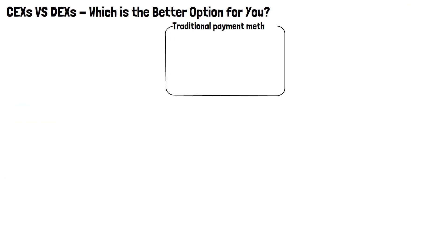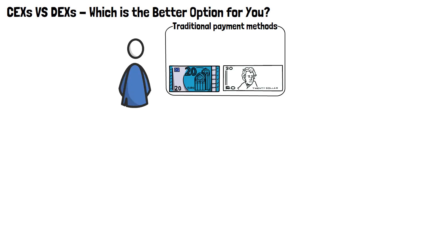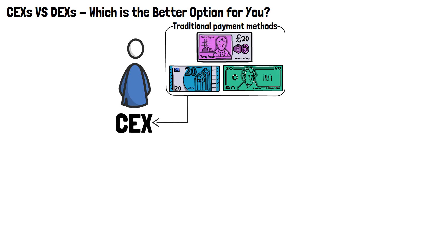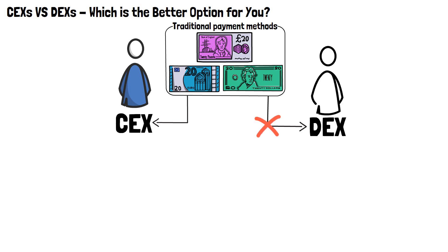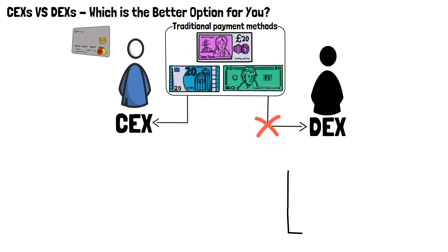Traditional payment methods are another key point to mention. If you're looking to buy cryptocurrencies with Euros, US Dollars, or any other traditional currency, then centralized exchanges are kind of your only option. That's because DEXs don't have this feature — remember, they're anonymity-driven. There wouldn't really be all that much anonymity if you'd end up revealing all of your bank details to the exchange.